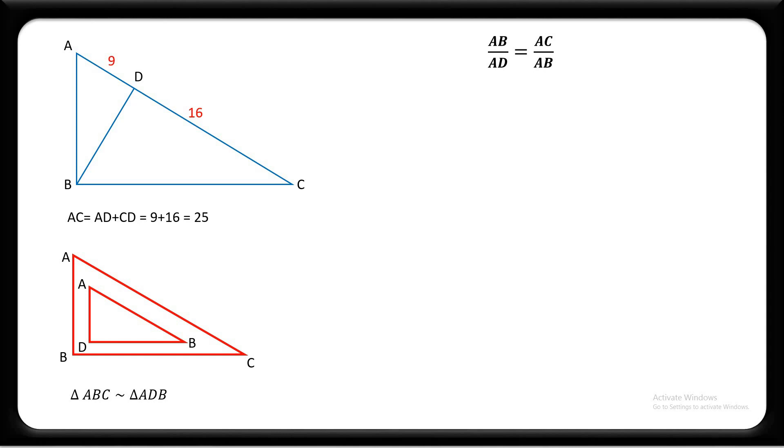So AB divided by AD equals AC divided by AB. Now AB squared equals AD multiplied by AC. Put the value of AD equal to 9 and AC equal to 25. Now AB squared equals 225.